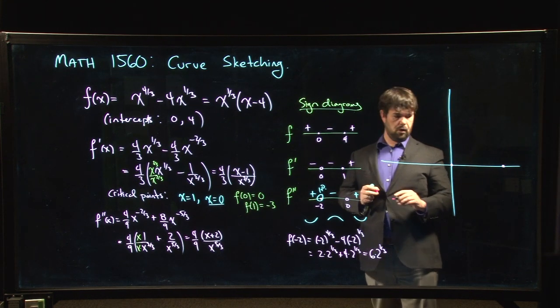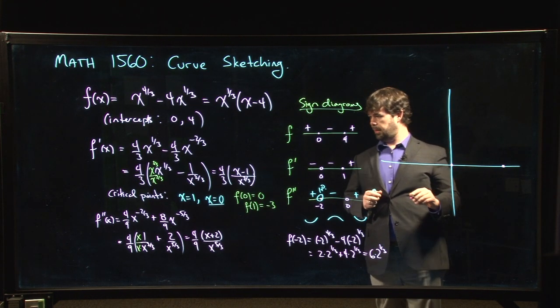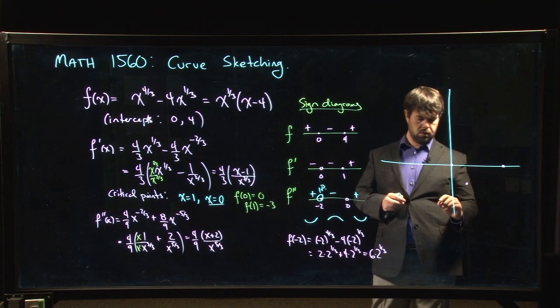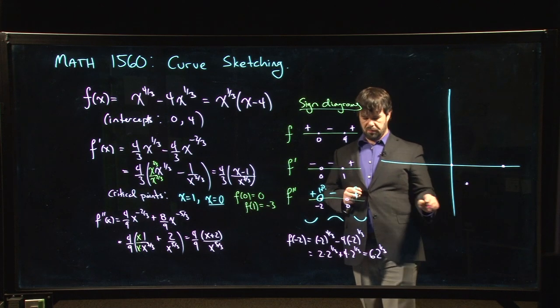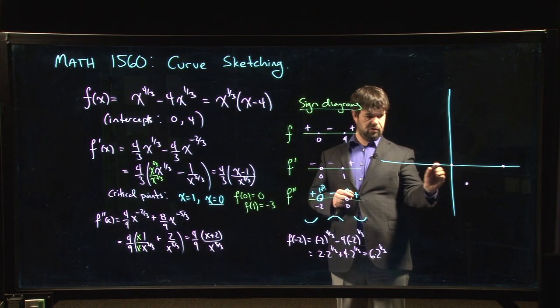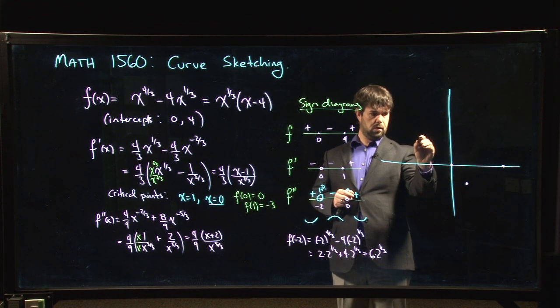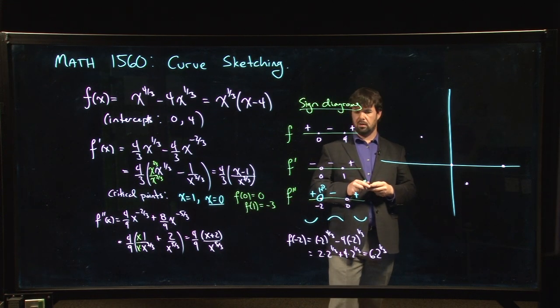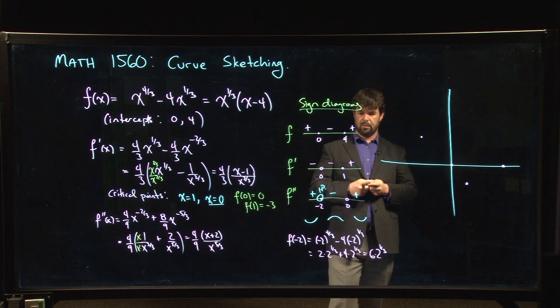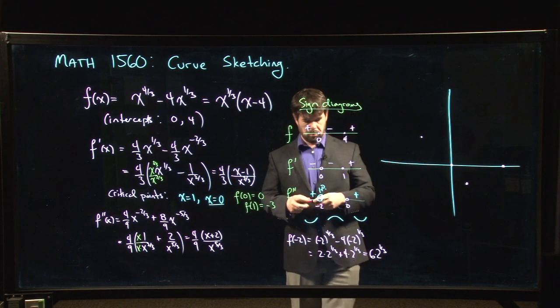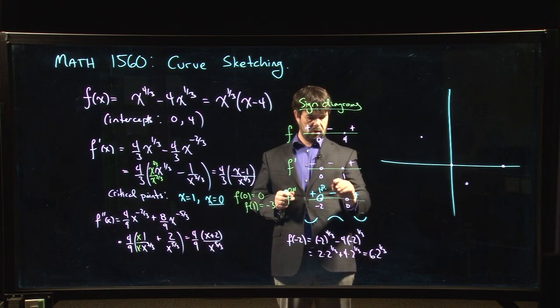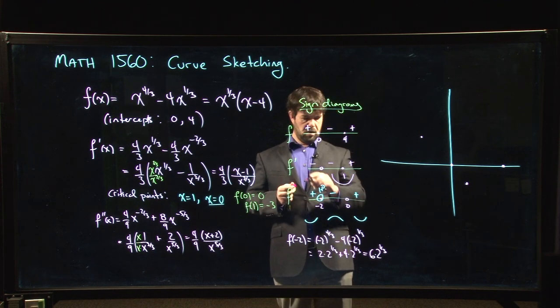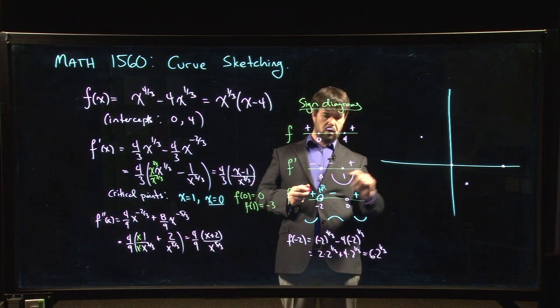We're going to mark off our critical point, which is a minimum down here. Okay, and we've got this inflection point, which is over here somewhere. Okay, and that's all the relevant information that we have, and now we just have to make sure we connect the dots. We see that we're going from decreasing to increasing, so this is a minimum. So we're decreasing through 0.